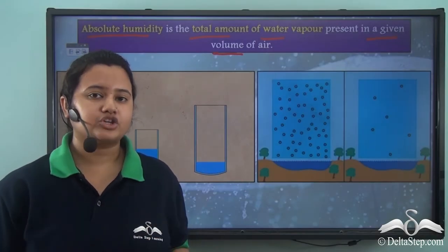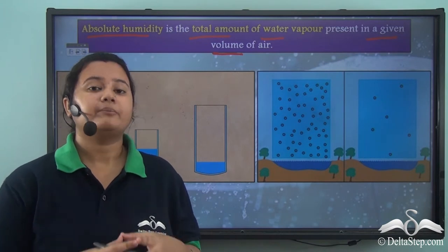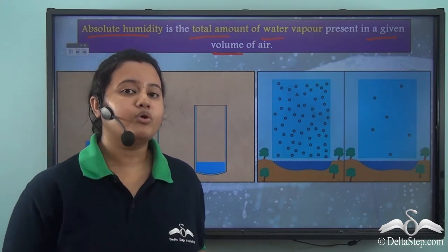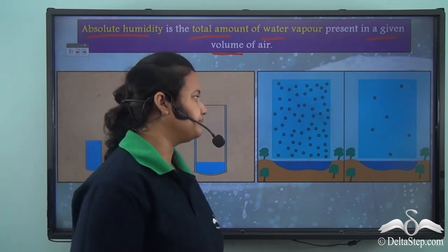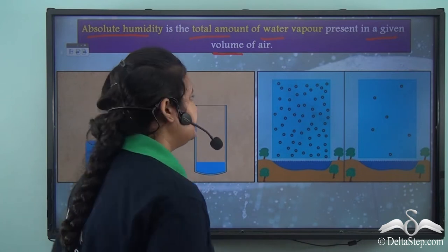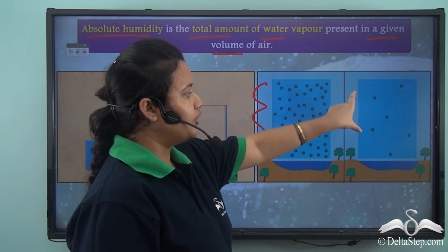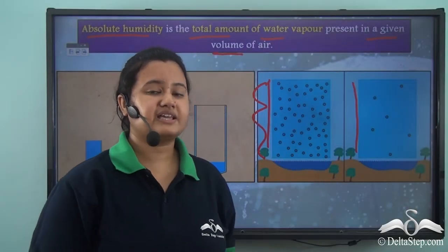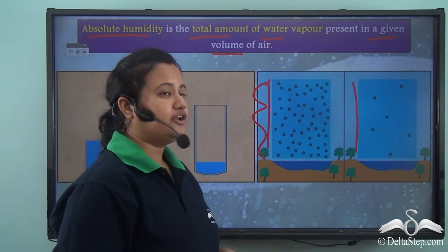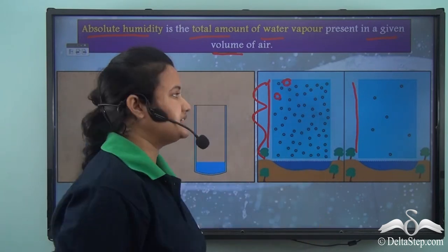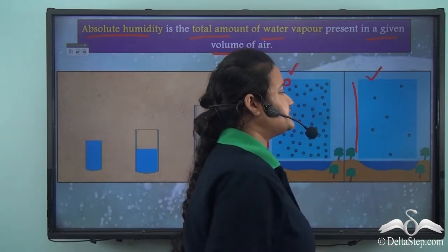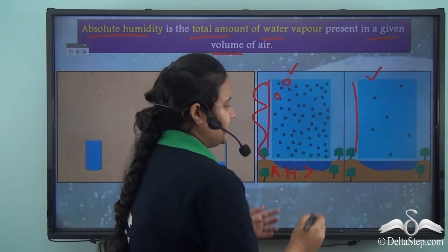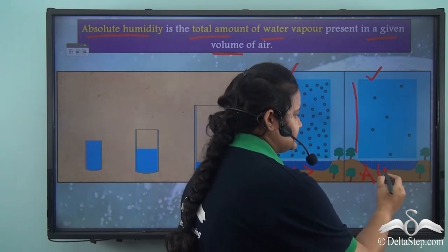Absolute humidity measures the actual or exact amount of water vapour present in a given volume of air. If a certain volume of air contains more water vapour, then absolute humidity is more. Looking at two air columns of the same fixed volume, we can see that more water vapour is present in one case than the other — so absolute humidity is more in the first case and less in the second.